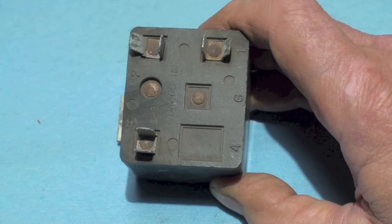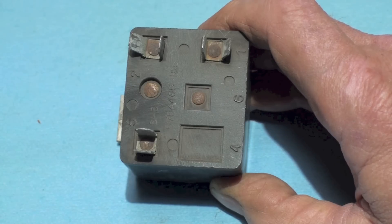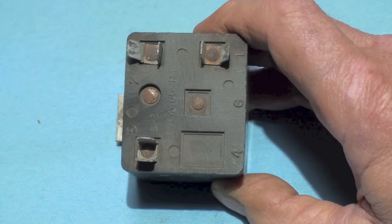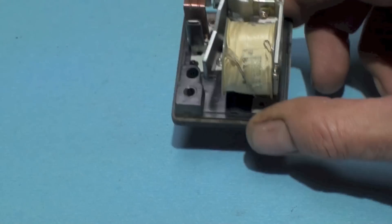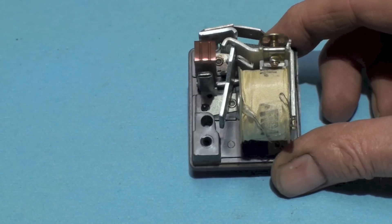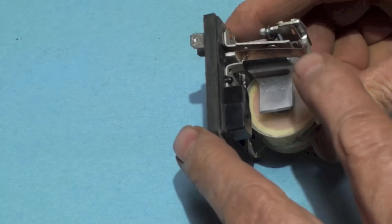Now we're going to take this apart and we're going to look inside and see what there is there. Okay, here's what it looks like when I pull the cover off. The contacts are right here and you can see they're closed.